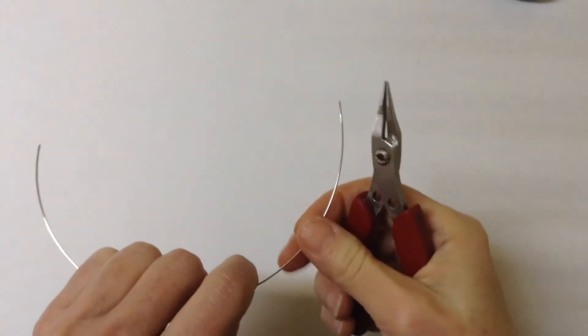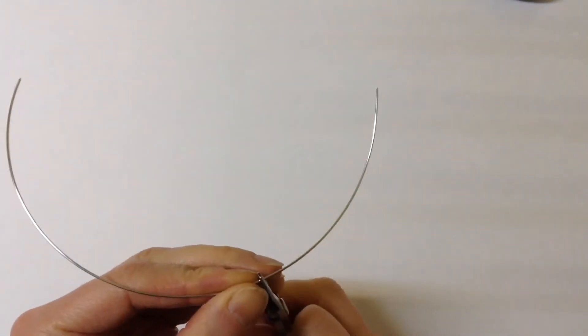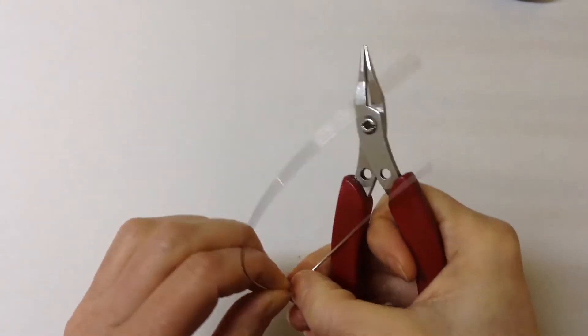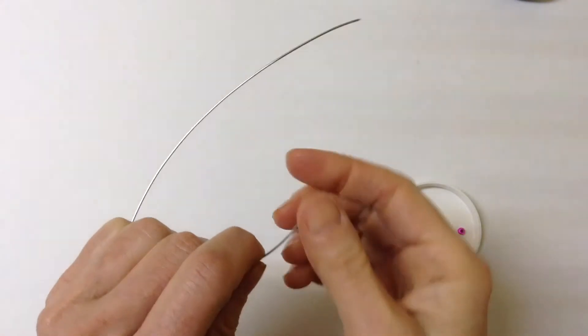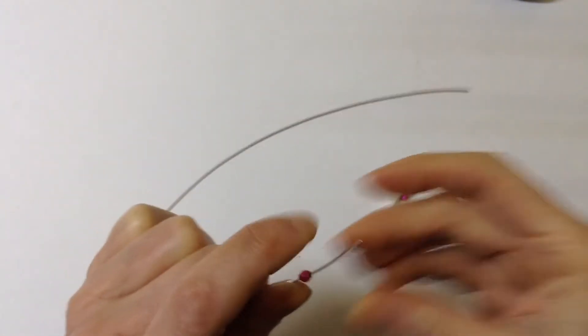To get started we're going to bend the wire at a right angle about halfway or a third of the way along. Then we're going to put on six four millimeter beads.